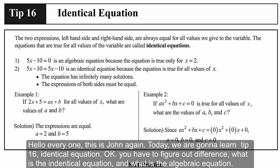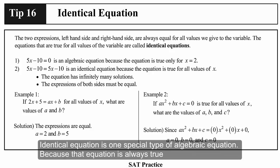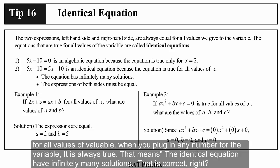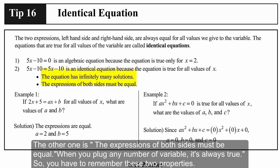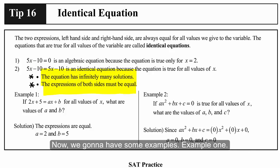Hello everyone, this is John again. Today we're going to learn tip 16: identical equations. You have to figure out the difference between an identical equation and an algebraic equation. An identical equation is one special type of algebra equation because that equation is always true for all values of the variable. When you plug in any number for the variable, it is always true — that means the identical equation has infinitely many solutions.